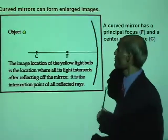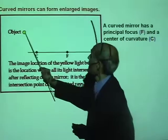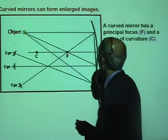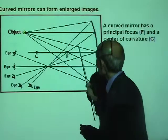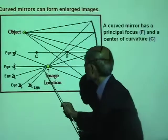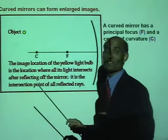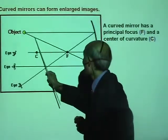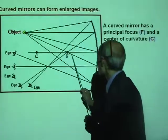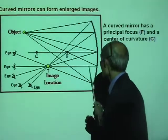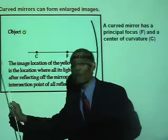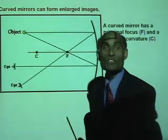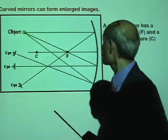I'm going to define principal focus one more time. A ray starting from the object parallel to the principal axis, after reflection, will go through the principal focus. Also, if you take a line that passes through the principal focus, after reflection it will go parallel to the principal axis.